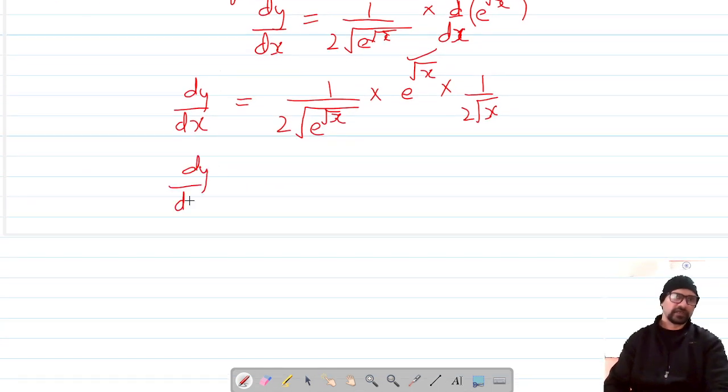So we are done with our differentiation. Let's just simplify and put them in order. So this is 1 by 4, and we can put them as root x into root of e raised power root x upon e raised power root x.